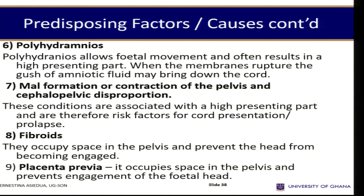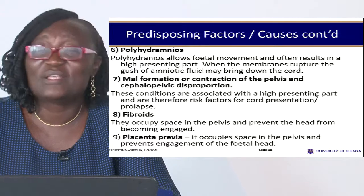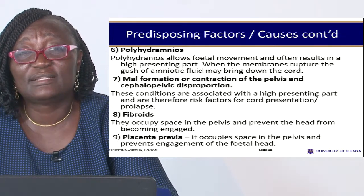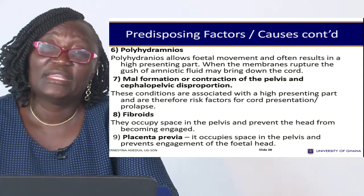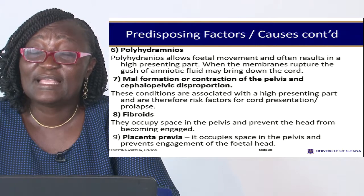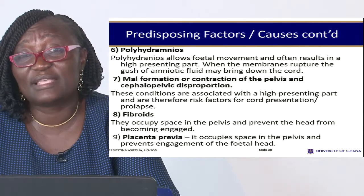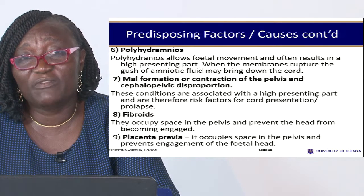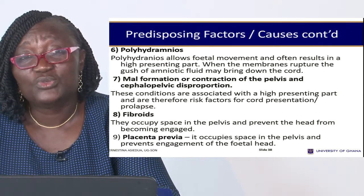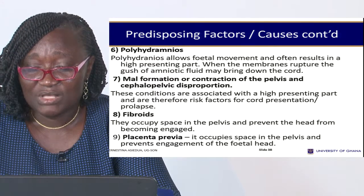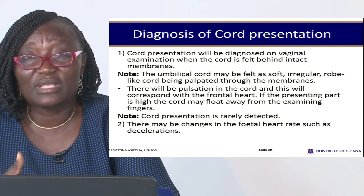Malformation or contraction of the pelvis and cephalopelvic disproportion are associated with a high presenting part, which allows the cord to come in front. Fibroids occupying space in the pelvis prevent the head from engaging, and once the head cannot engage, the cord can present first. In placenta praevia, the placenta is situated in the lower uterine segment, occupying space and preventing engagement of the fetal head, thereby also allowing cord prolapse.